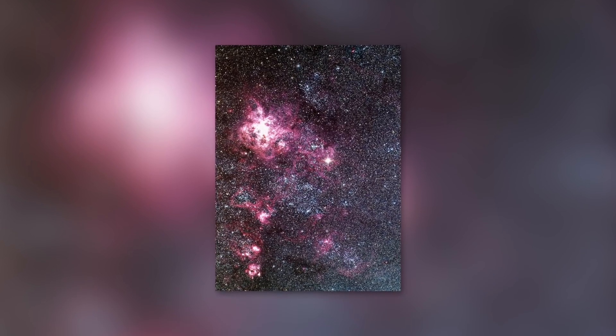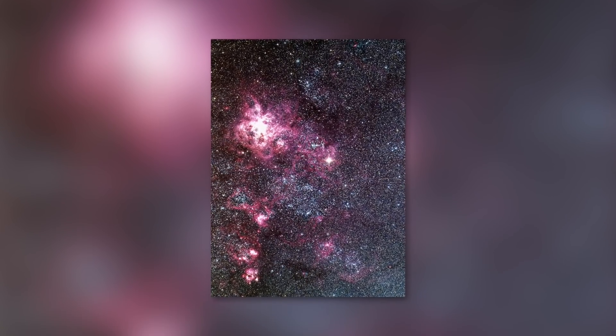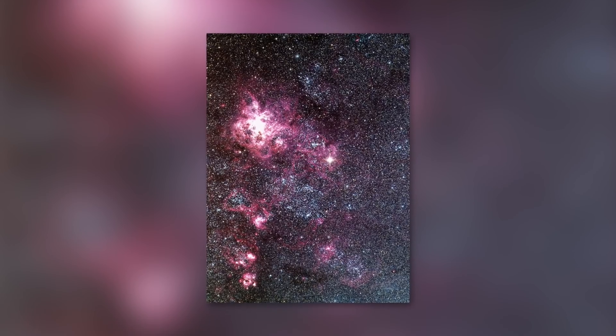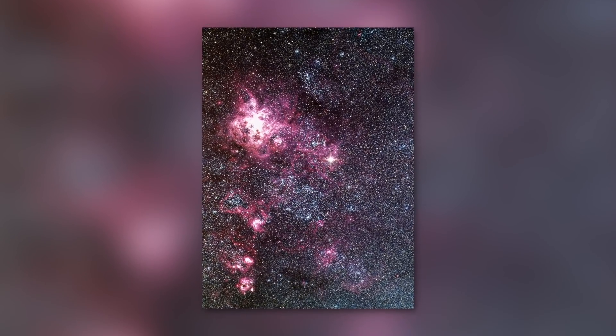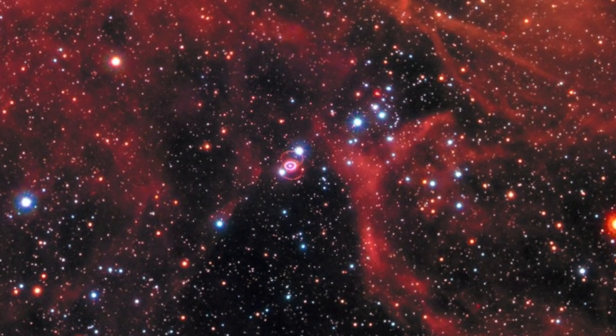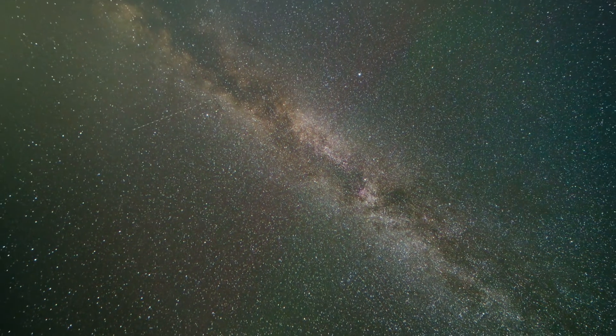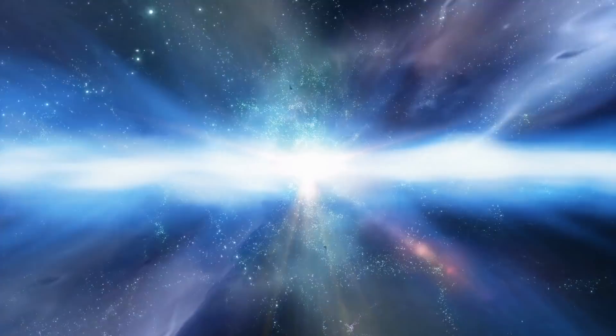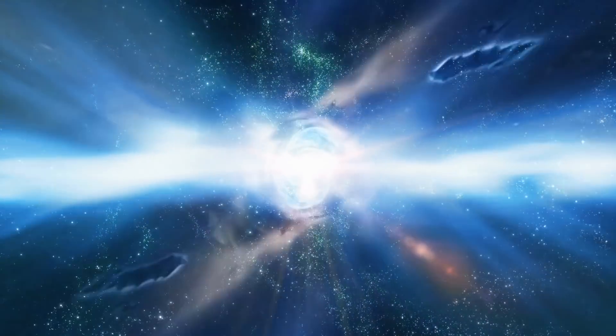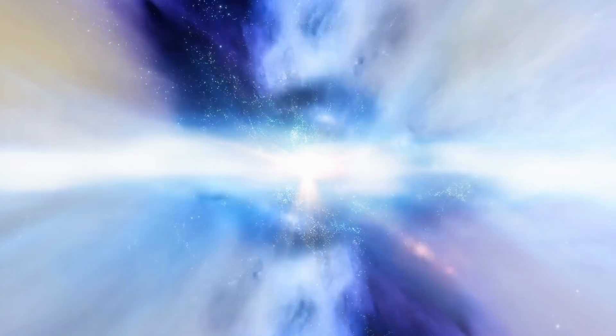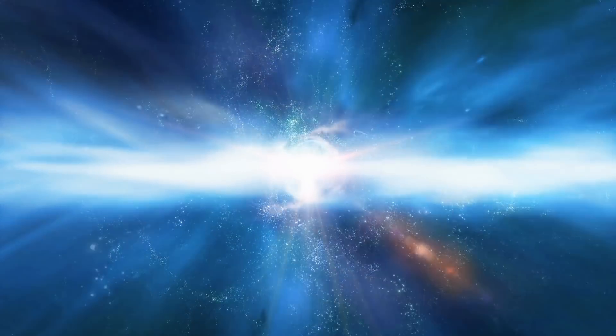Supernova 1987A was discovered in the Large Magellanic Cloud on February 24, 1987. The Large Magellanic Cloud is a dwarf galaxy which is in close proximity to the Milky Way. However, at about 16,000 light-years away, this event was much further away than Betelgeuse will be.